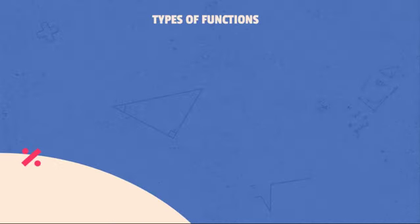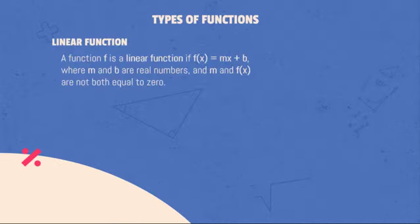Types of functions: Linear function. A function f is a linear function if f(x) = mx + b, where m and b are real numbers, and m and f(x) are not both equal to zero.